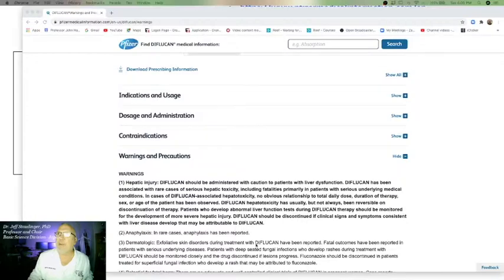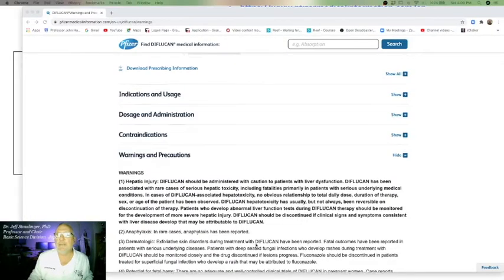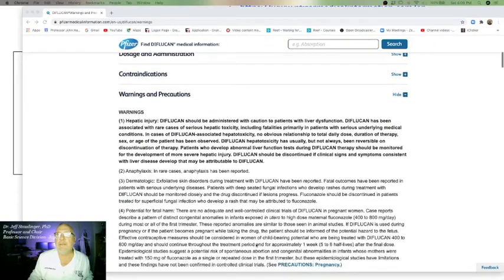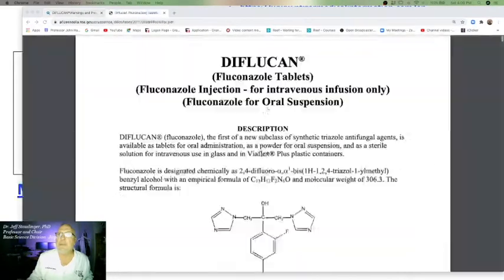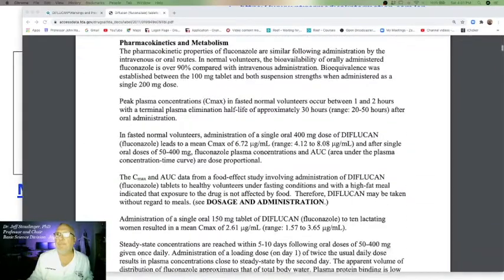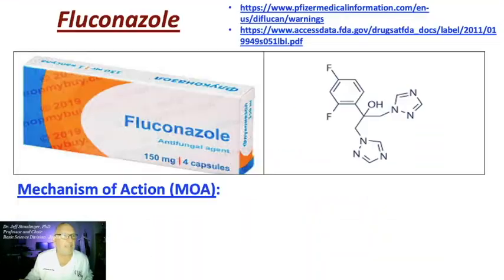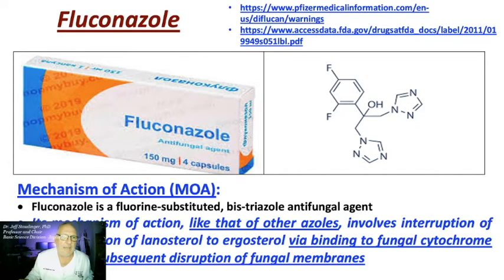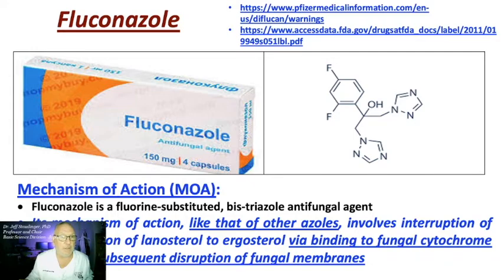Let's start with fluconazole. There are links available — one to the Pfizer website and another reference link. The mechanism of action, like that of other azoles, involves interruption of lanosterol to ergosterol conversion by fungal cytochrome P450s and subsequent disruption of the fungal membrane.